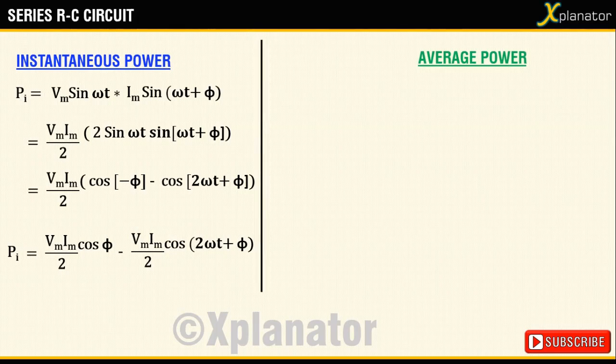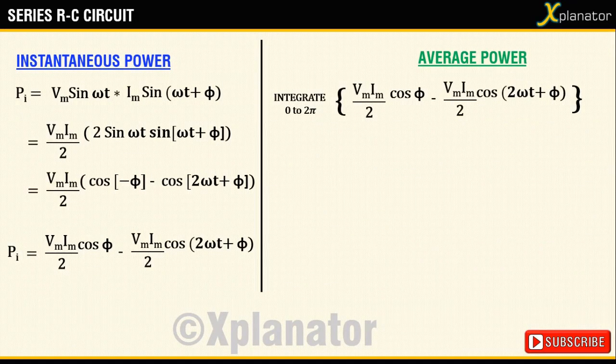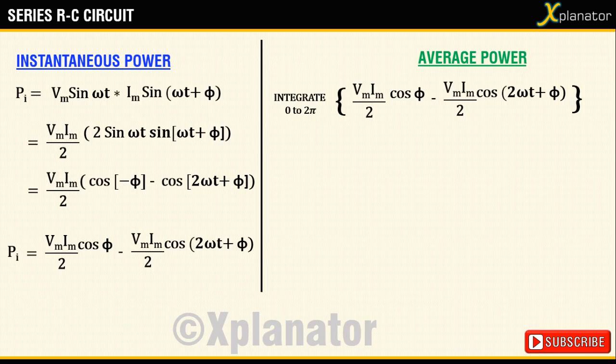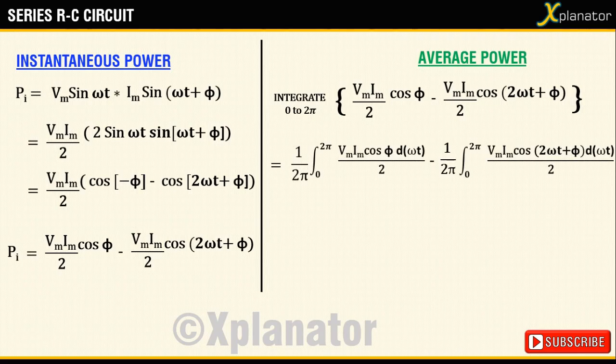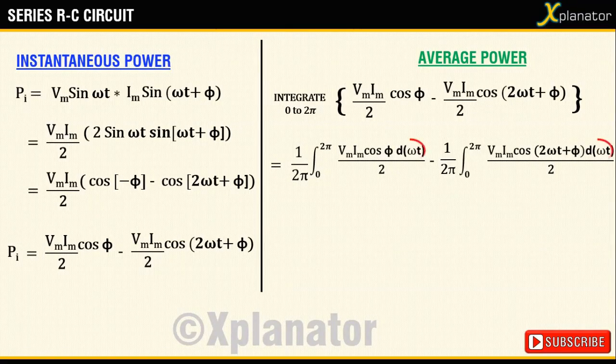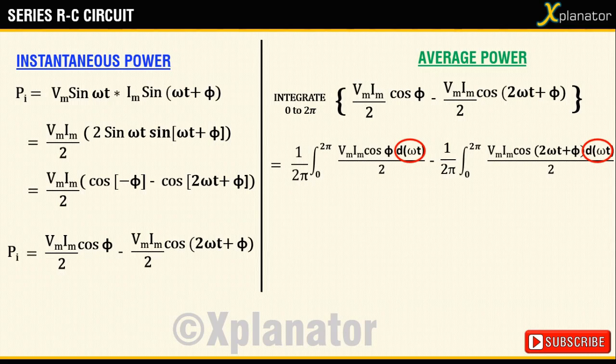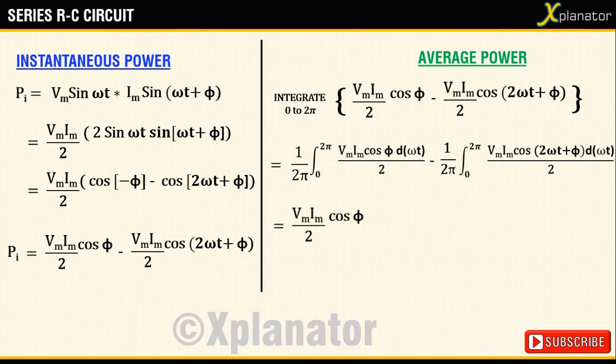Next, to find the average power, integrate the equation over the working cycle, i.e., from 0 to 2π, and divide it by the total time interval. The integration is carried out with respect to ωt. The first part of the equation has no ωt, so all terms are constant.